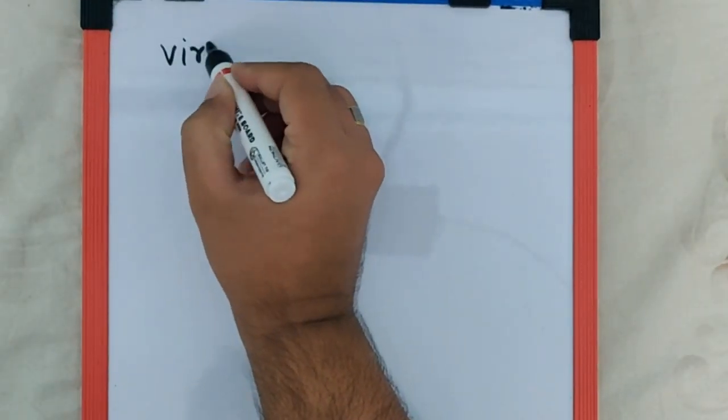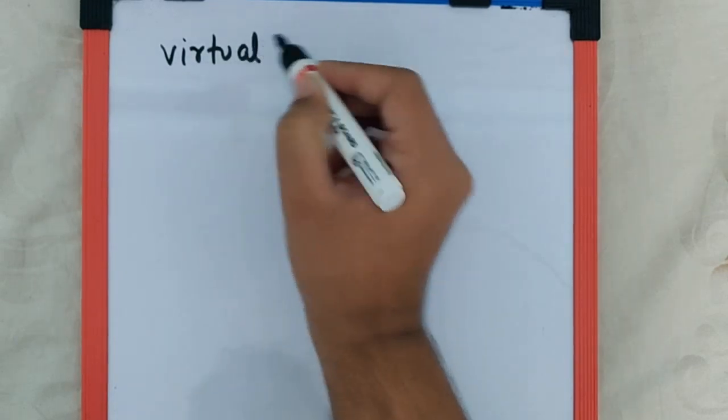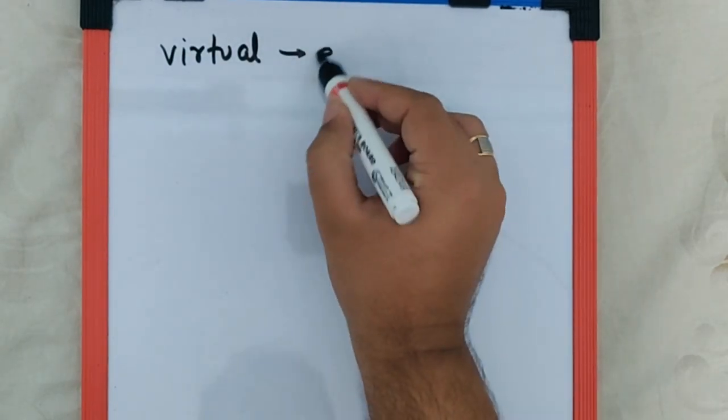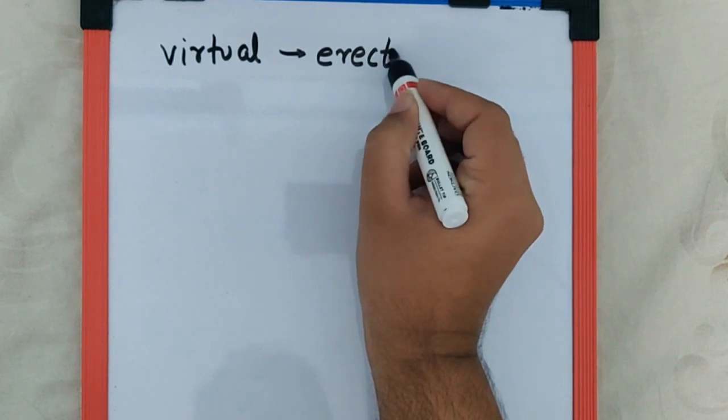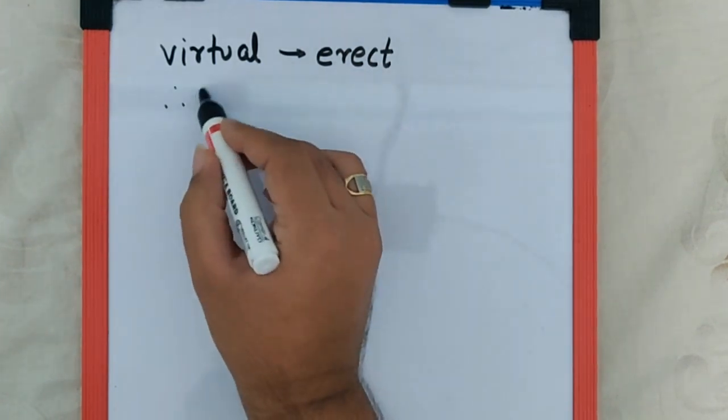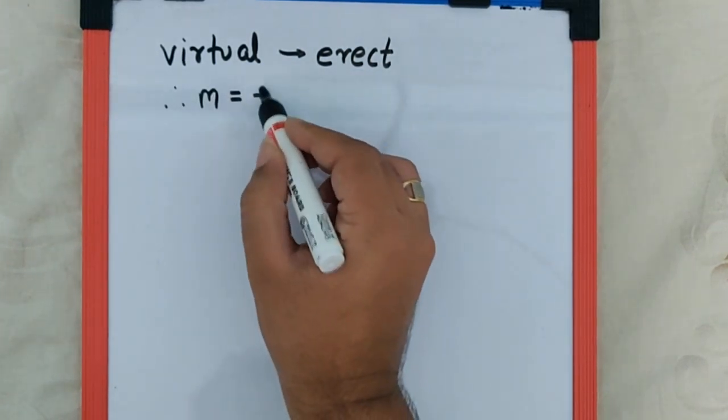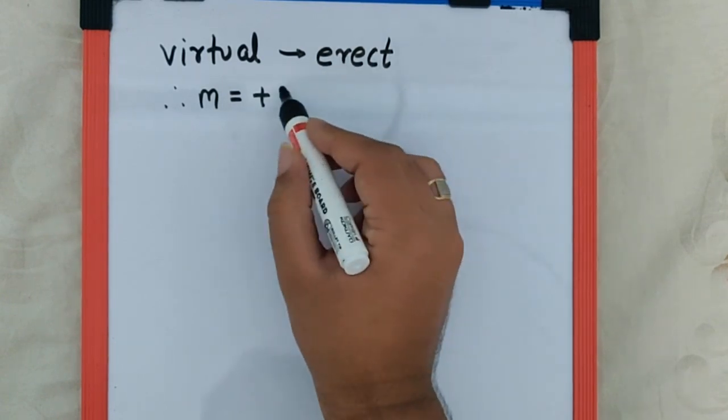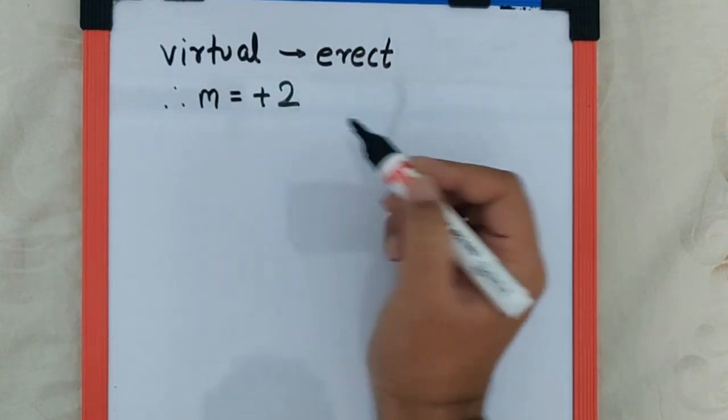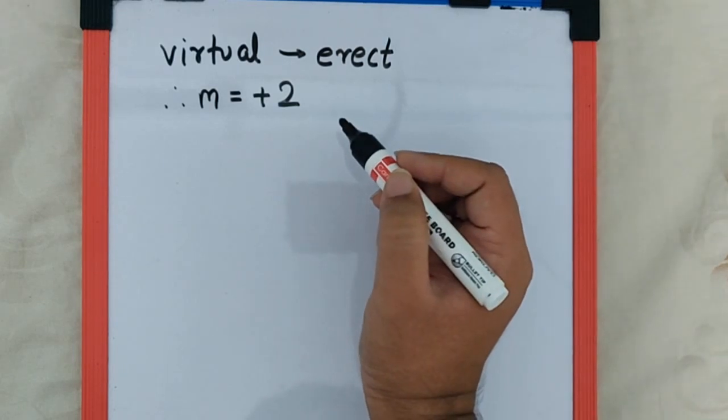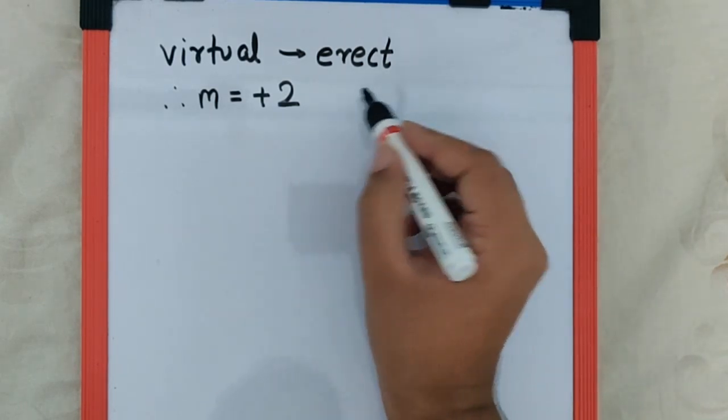...by default it means erect, which means the magnification is positive. And they say it is double the size, which means magnification is 2. Now for lens we know...